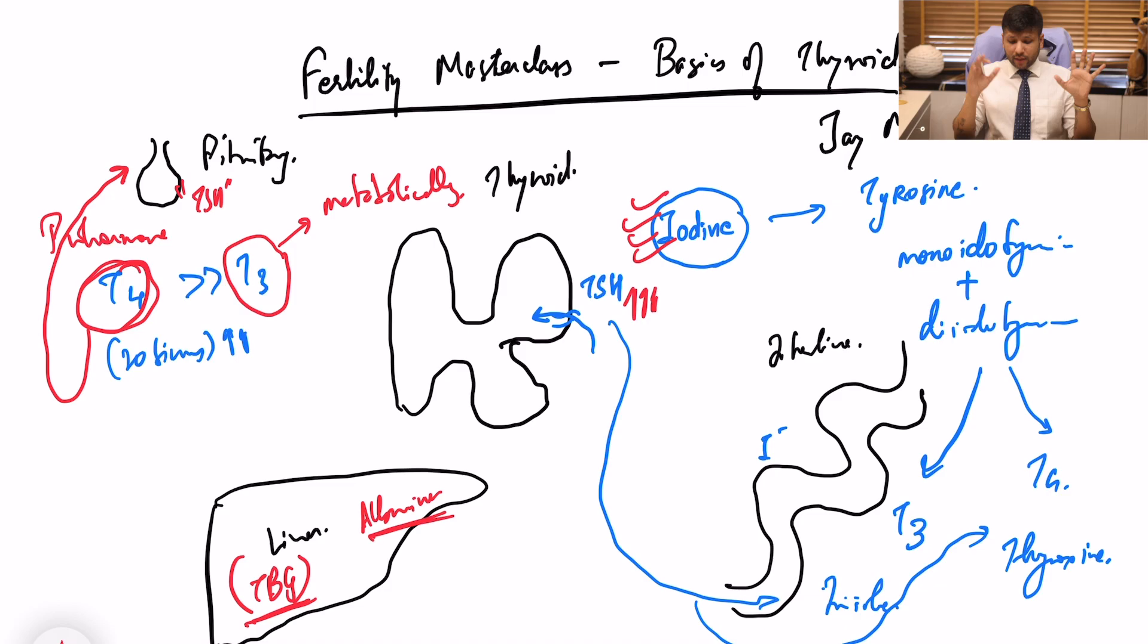Now once we know the basics, we are going to discuss in our next masterclasses the effect of thyroid on reproduction, the effect of thyroid in pregnancy and basic management. Remember as gynecologist, what is important is we may involve our endocrinology colleague in the management for medical legal purposes, for more detailed observation and management. But as gynecologist, I think it is very important that we know these things. Once we know these things, this is something which we deal day in day out, especially in cases of fertility, especially in cases of pregnancy. And I think these basic things are very important to know.